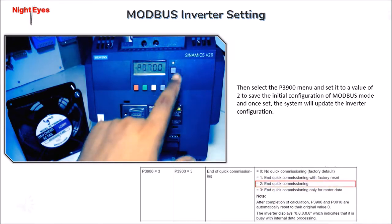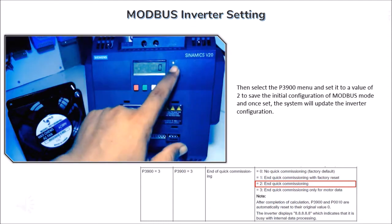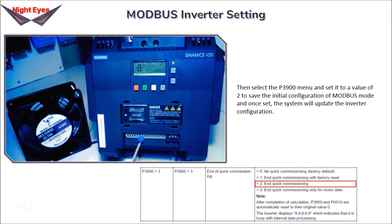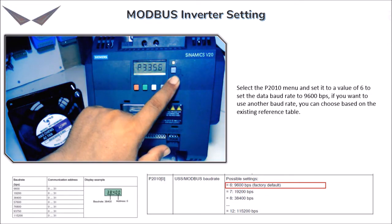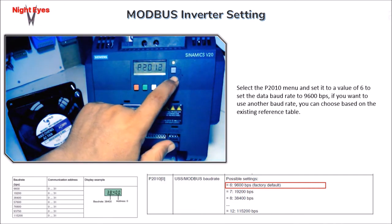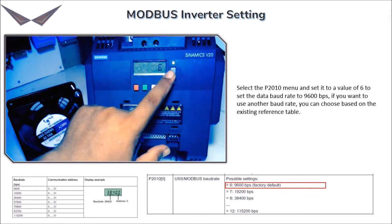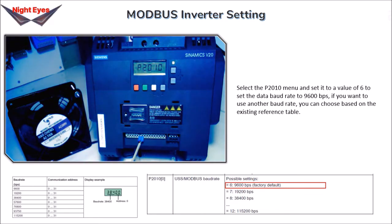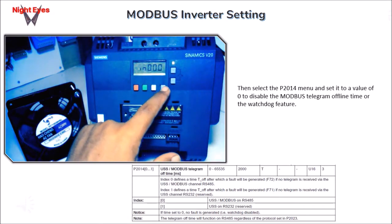Select P3900 and set it to 2 to save the initial Modbus configuration; once set, the system will update the inverter configuration. Select P2010 and set it to 6 to set the baud rate to 9600 bps — other baud rates can be chosen from the reference table. Then select the P2010 telegram timeout menu and set it to 0 to disable the Modbus telegram offline time or watchdog feature.